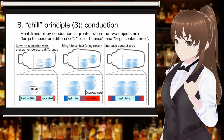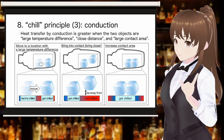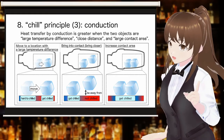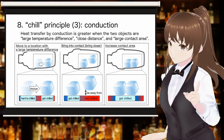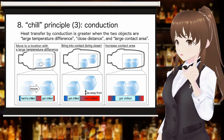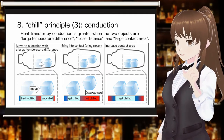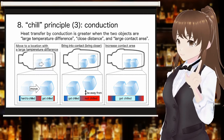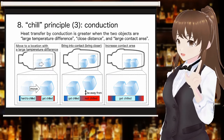Thermal conductivity does not change, but heat transfer by conduction can be improved through ingenuity. Heat transfer by conduction is greater when the two objects have a large temperature difference, close distance, and large contact area. The key to chilling the shaker by conduction is to have the ice in wide contact with the inside of the shaker and, furthermore, to keep moving the ice to areas where it is not touching and where the temperature is higher, rather than keeping the ice in one place.